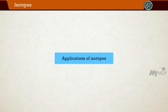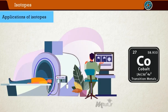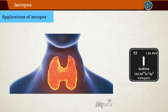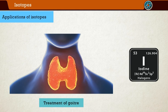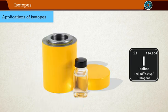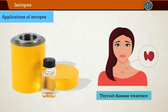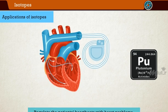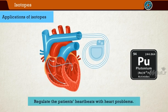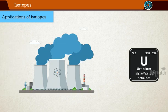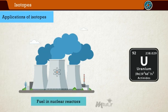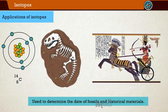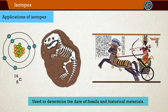Now, we'll see some of the uses of these isotopes. An isotope of cobalt is used in the treatment of cancer. An isotope of iodine is used in the treatment of goiter. Iodine-131 can also be used in thyroid disease treatment. A heart pacemaker that contains plutonium-238 can be used to regulate the patient's heartbeats with heart problems. An isotope of uranium is used as a fuel in nuclear reactors. Carbon-14 is used to determine the date of fossils and historical materials. Well, that's all about the isotopes.